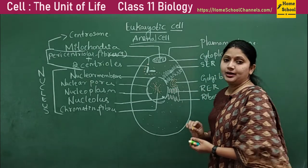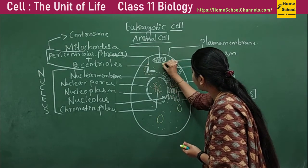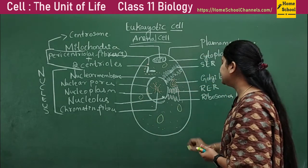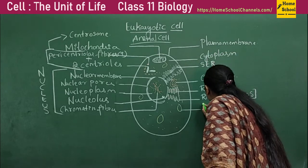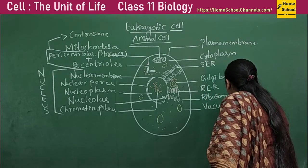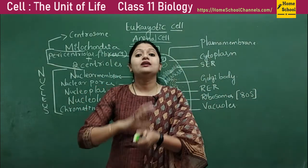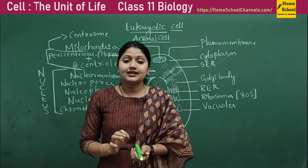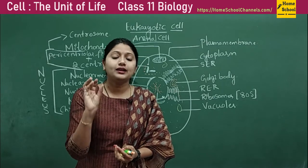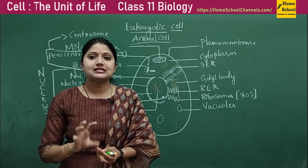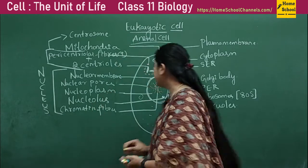The next membrane-bound organelle is vacuoles. There are numerous small vacuoles present in the animal cell, distributed all over the cell. Whereas in the plant cell there is one centrally located large vacuole.